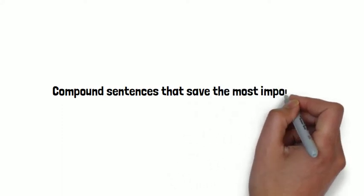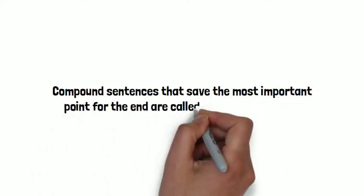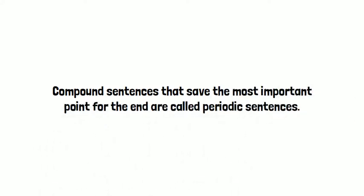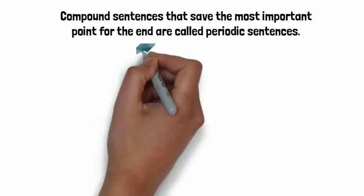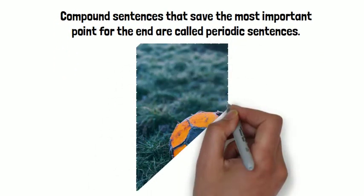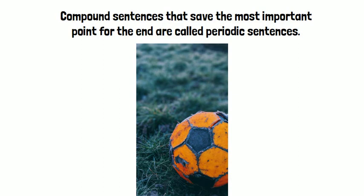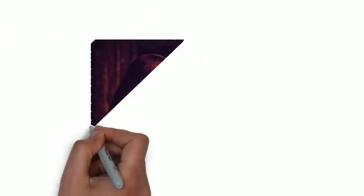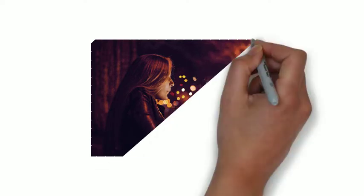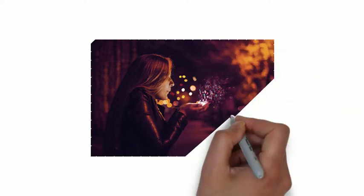Compound sentences that save the most important point for the end are called periodic sentences. They should not be overused, for this would cause them to lose their rhetorical effect. However, a periodic sentence situated at just the right place and at just the right time, well, that's magic.